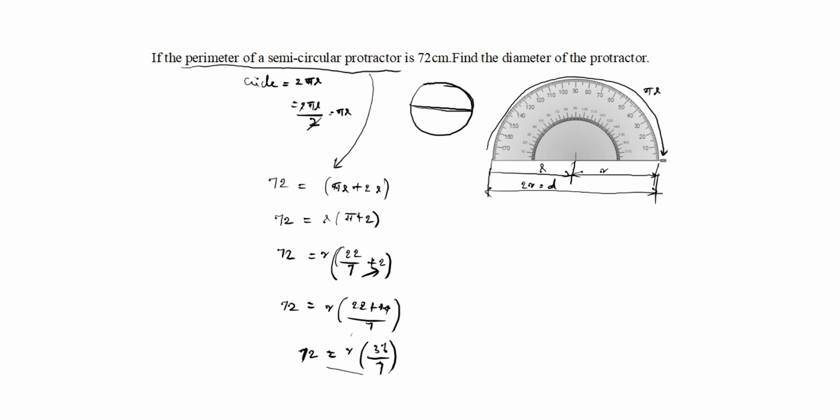We have to cross multiply this. So 72 into 7 by 36 equal to r. This is 2 times 7. This is 14 centimeters equal to r.